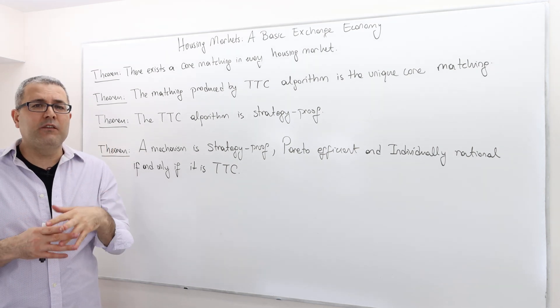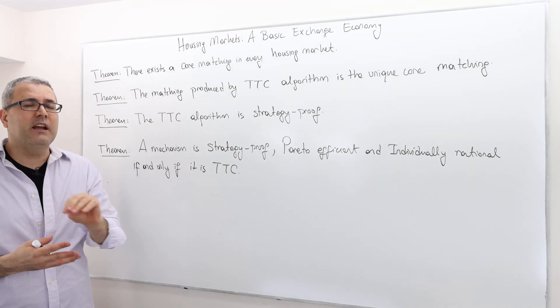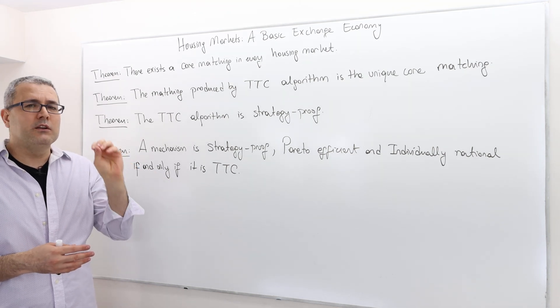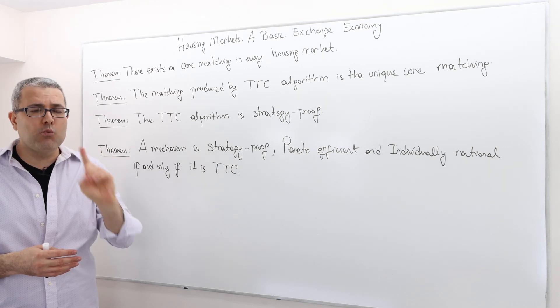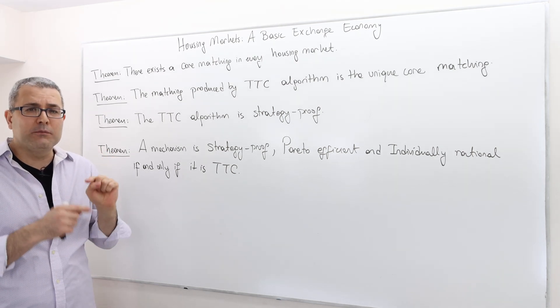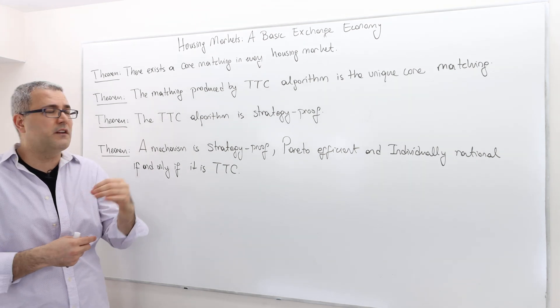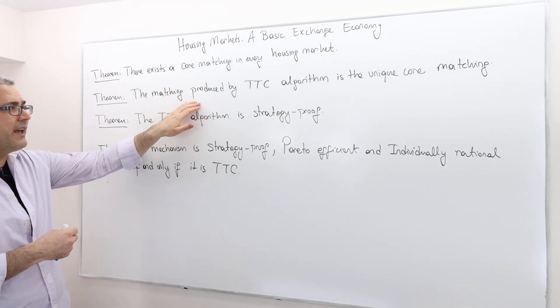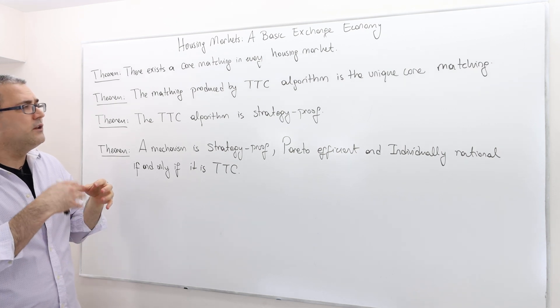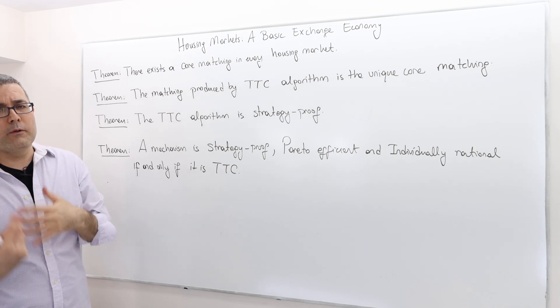Can we have more than one core? Well, no. Actually, it is unique. So for any housing market problem, the core is going to include one and only one allocation. And this allocation will be captured by the TTC algorithm, the top trading cycle algorithm. So in that sense, it's a very useful mechanism. The next theorem says the matching produced by the top trading cycle algorithm or mechanism is the unique core matching.